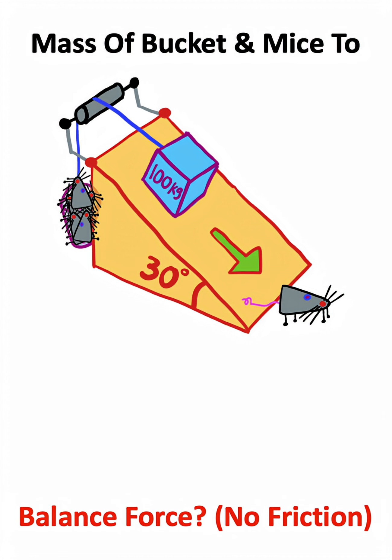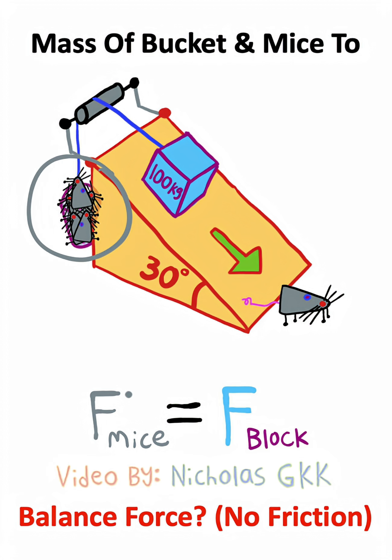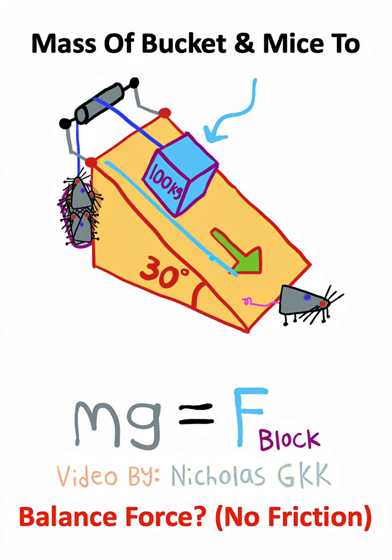We just need to set the force of the mice equal to the force of the block. Now the mice are just dangling over the edge so the force will be mg, and the block is sliding down the incline so the force will be mg sine theta.